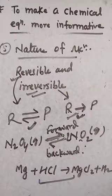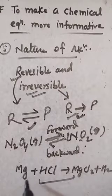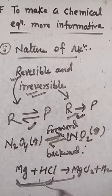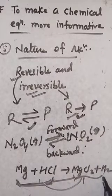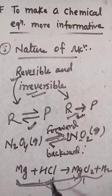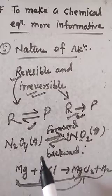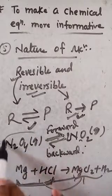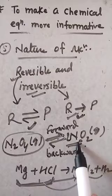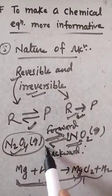By definition, when reactants react to form products but the products do not react to reform the reactants, the reaction is irreversible. In a reversible reaction, reactants react to form products and the products again reform the reactants. This back-and-forth process defines a reversible reaction.